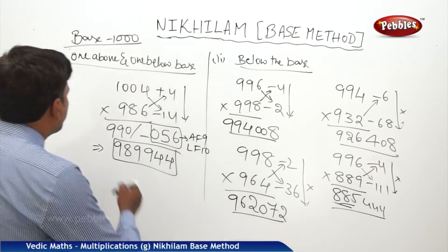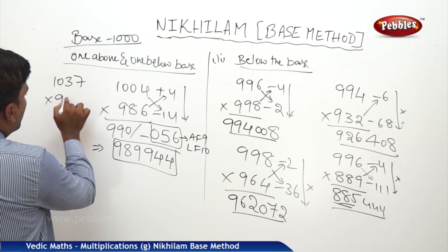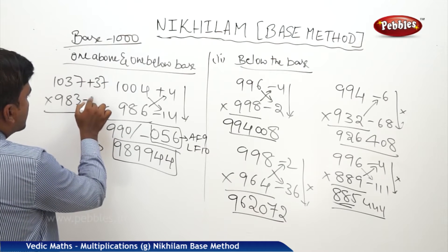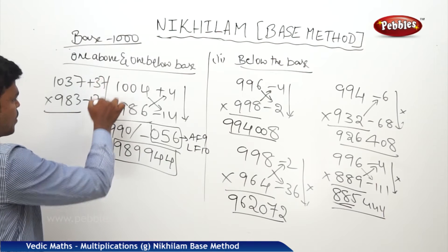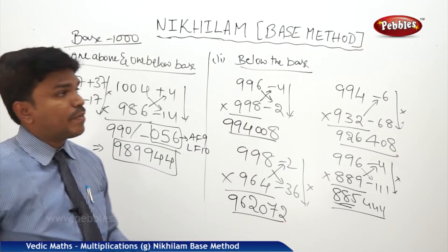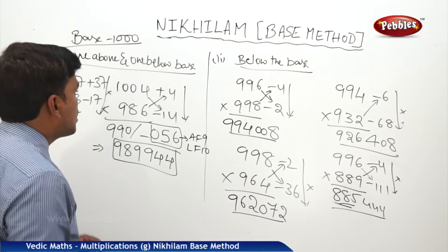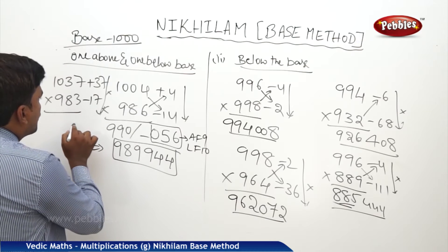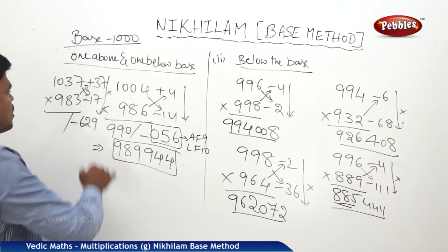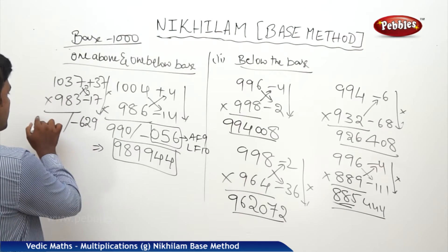One more example: 1037 into 983. This is plus 37 and this is minus 17. Multiply both: 17 into 37 — 510 plus 119 is 629. So we get minus 629 on the right side. Cross addition or subtraction: 983 plus 37, or 1037 minus 17, both give 1020.